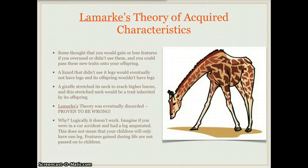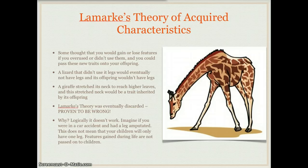Or a giraffe that stretched its neck to reach higher leaves on a tree would have babies with longer necks. Lamarck's theory was eventually discarded — it was proven to be wrong. The reason why is that it really doesn't work logically. If you were in a car accident and had your leg amputated, it doesn't mean your children will only have one leg. Features gained during your life are not passed on to children — which goes for plants, animals, and all organisms.